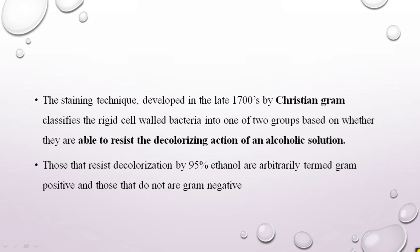This staining technique was developed in the late 1700s by a scientist called Christian Graham, who classified the rigid cell wall bacteria into one of two groups based on their ability to resist the decolorization action of an alcoholic solution. Christian Graham classified the bacterium based on the ability of the cell wall to resist this decolorization with alcohol.